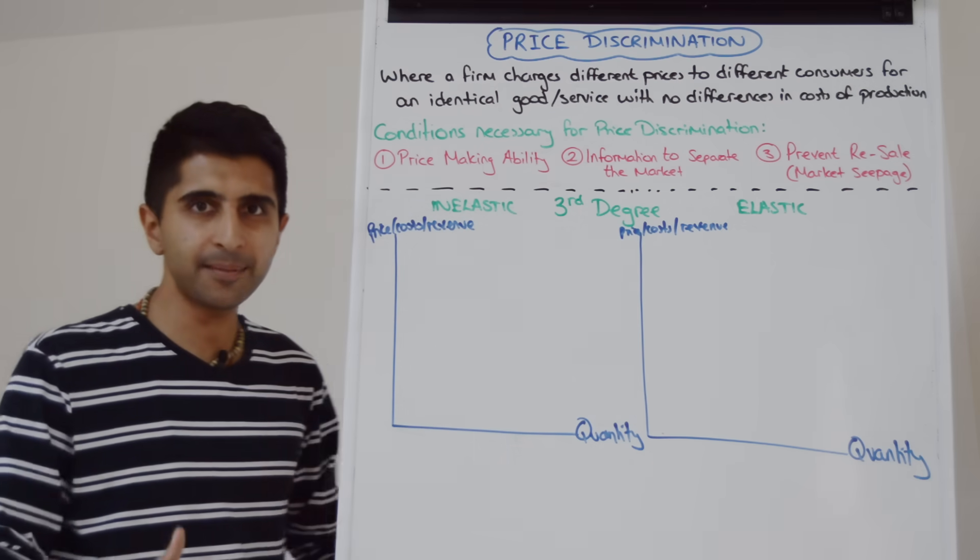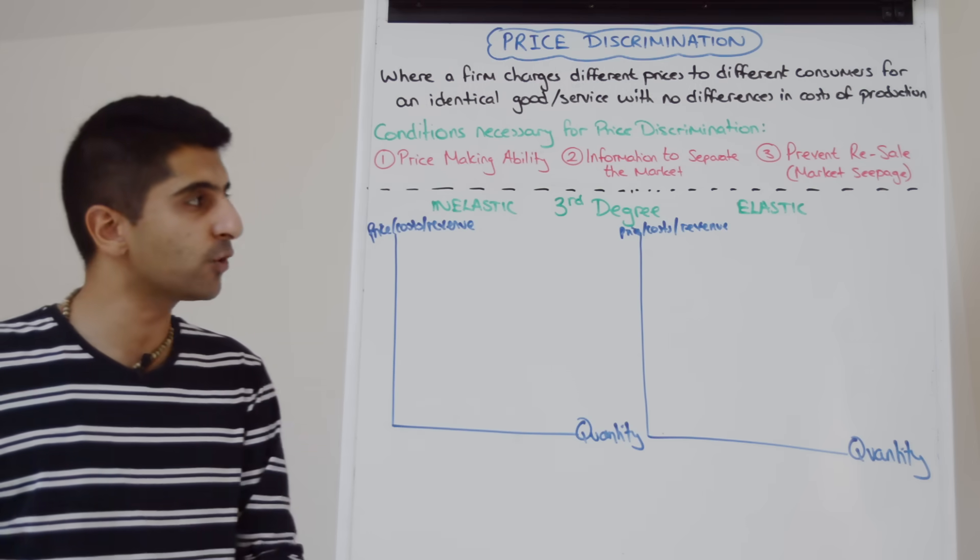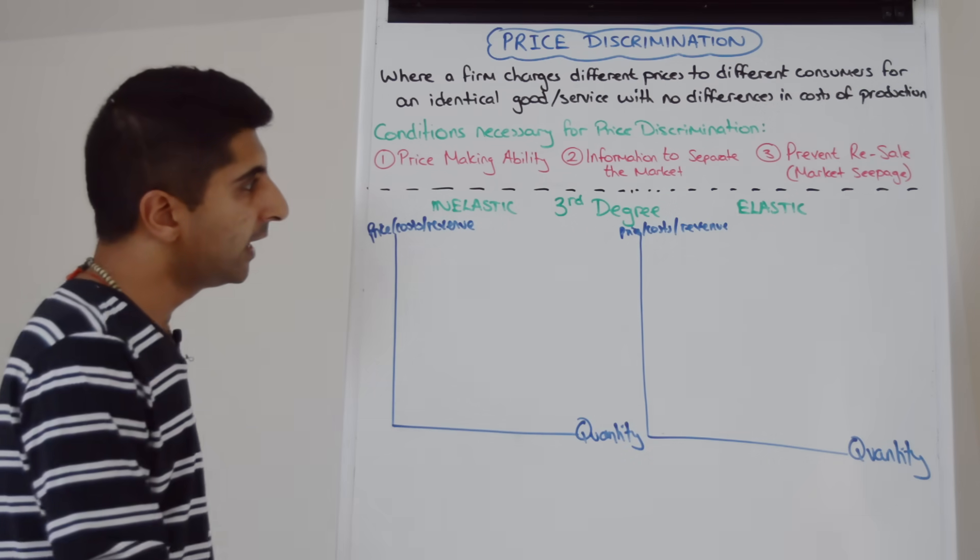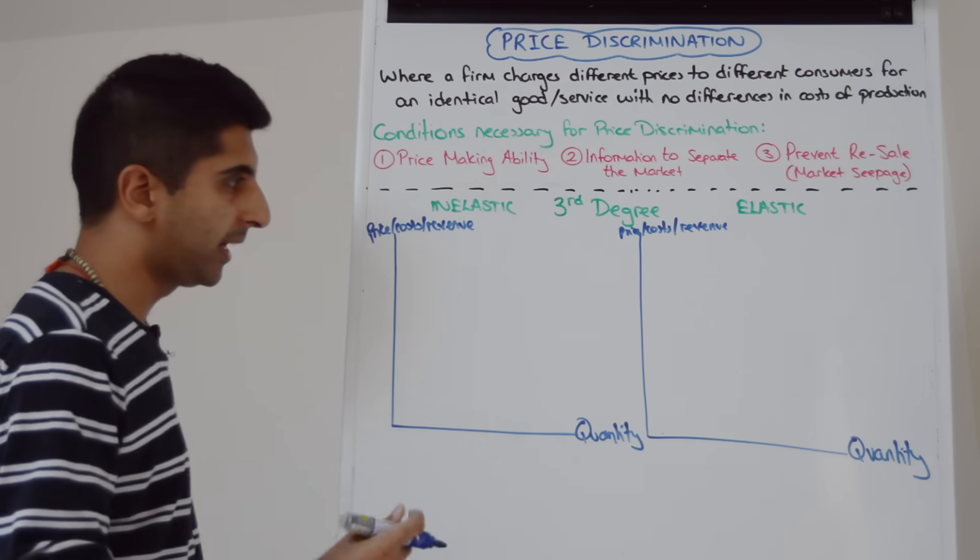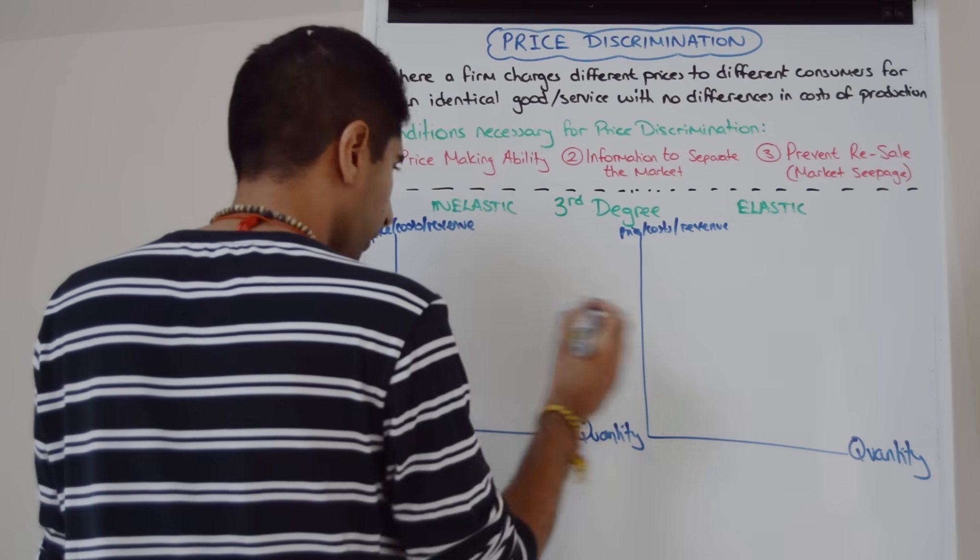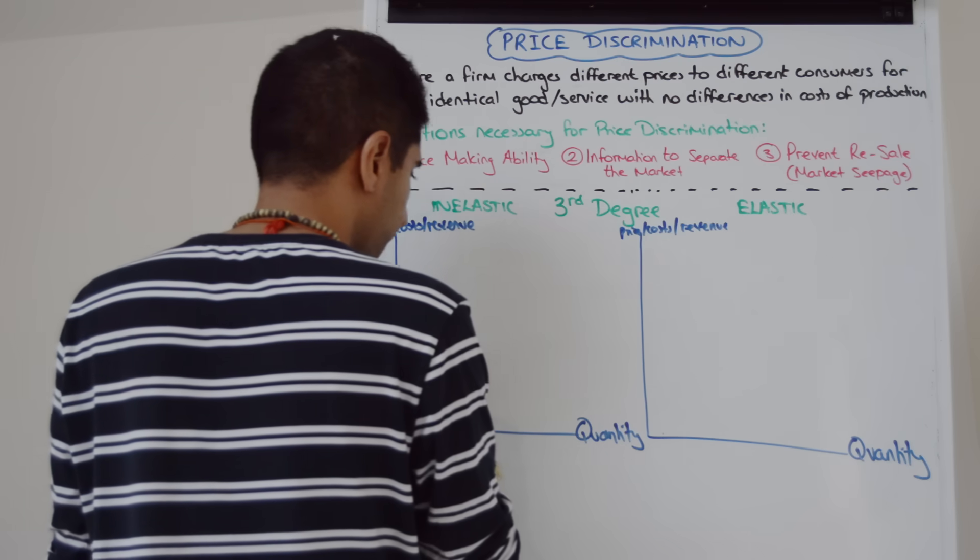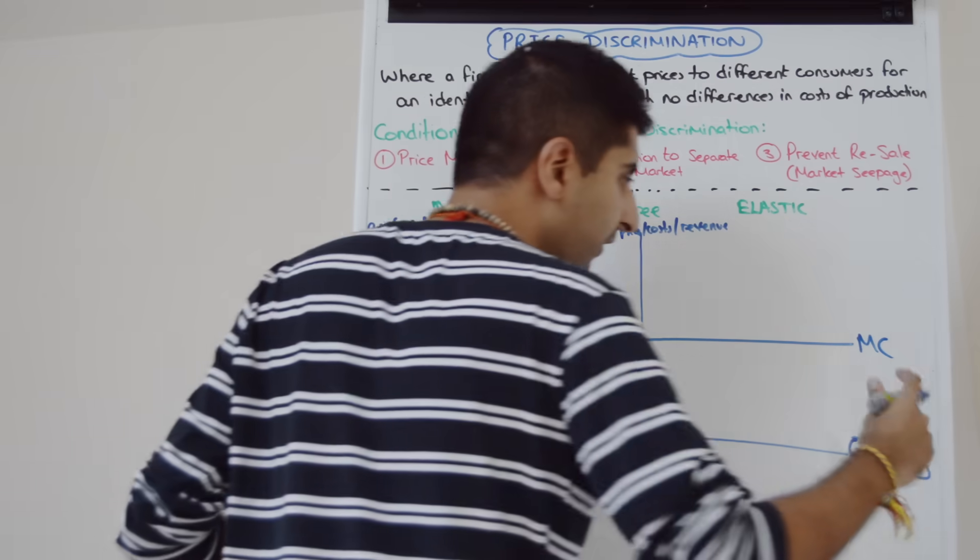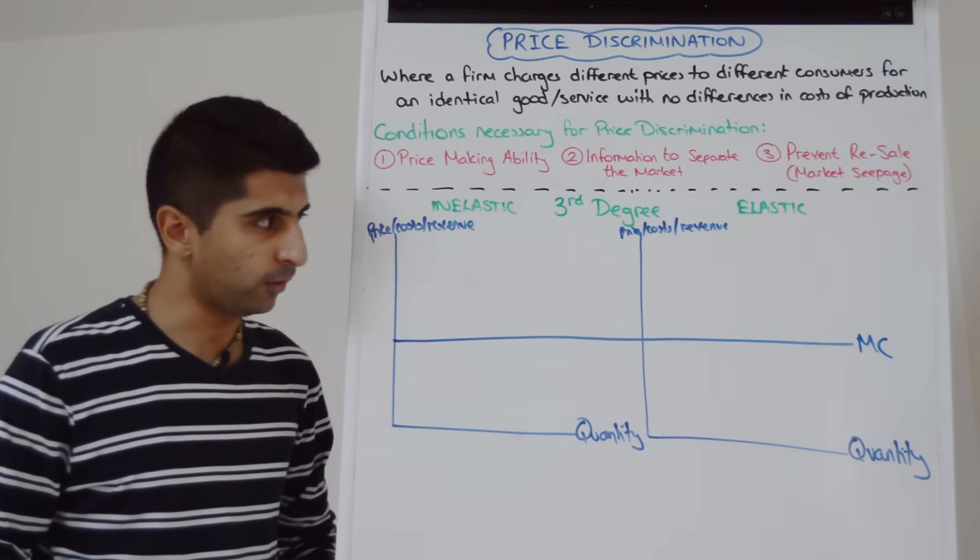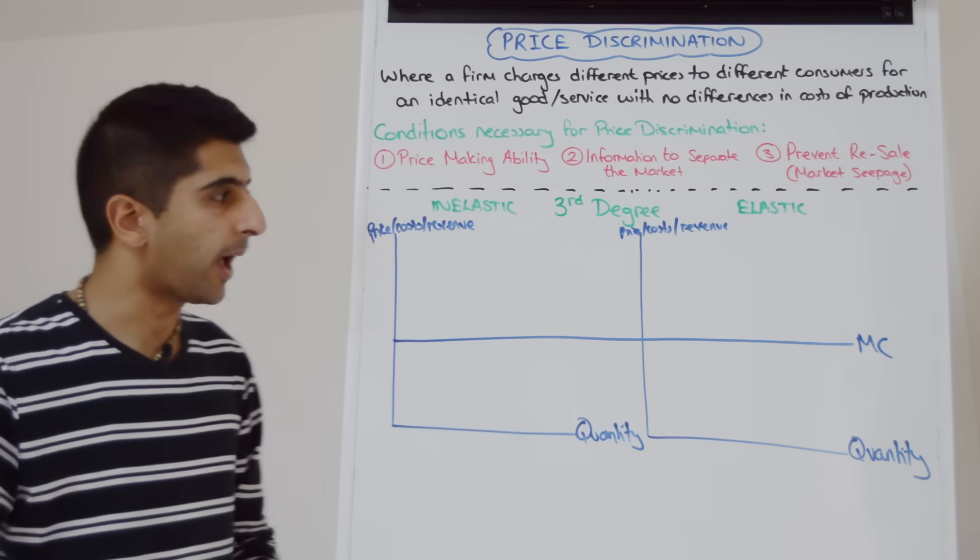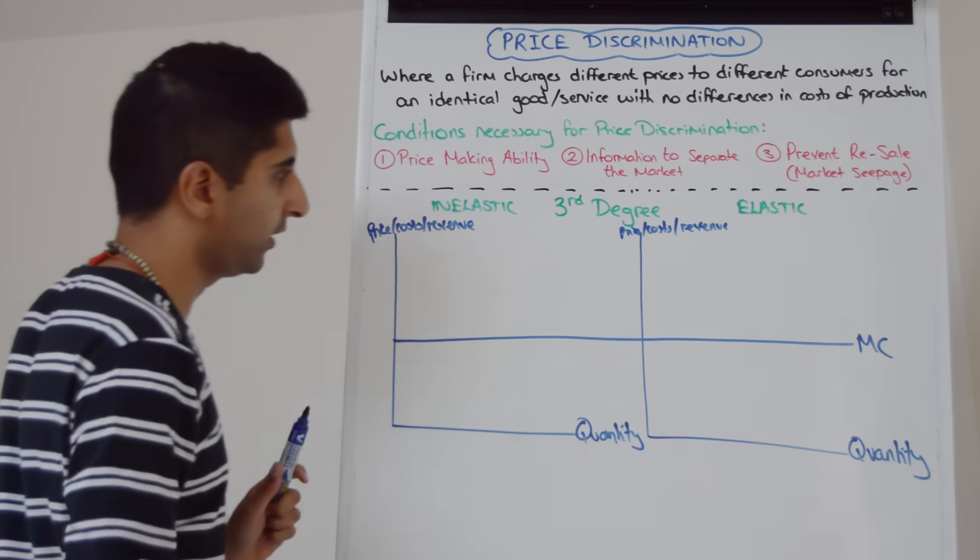The marginal cost curve for the rail company, let's assume, is constant, just like we argued before. So we'll say it's constant across both market segments here. So we take that across and we'll just call that the marginal cost. For the same reason we argue it as before, and that is to fill one more seat on the train, the cost is the same each time. Okay, so constant marginal cost here.